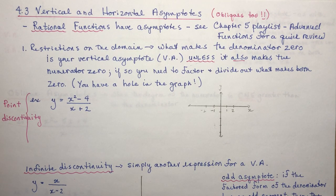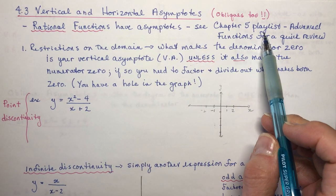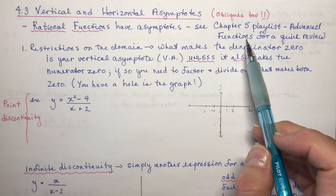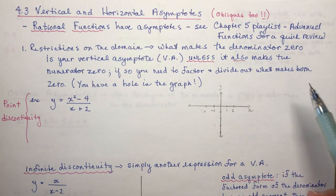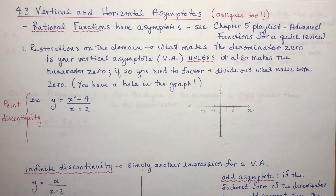If you go back to rational functions, in chapter 5 there's a playlist in the advanced functions section for a quick review of all the different types of asymptotes that I'll be covering here. I'll be covering them a little more briefly in this lesson because you should already understand how they work. But if you don't, look back at the chapter 5 playlist.